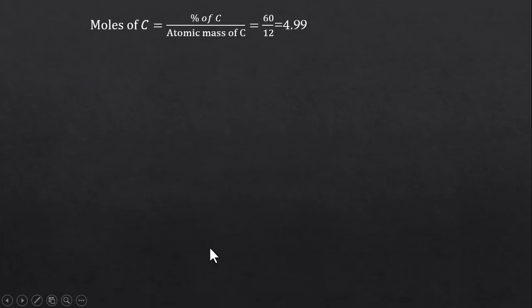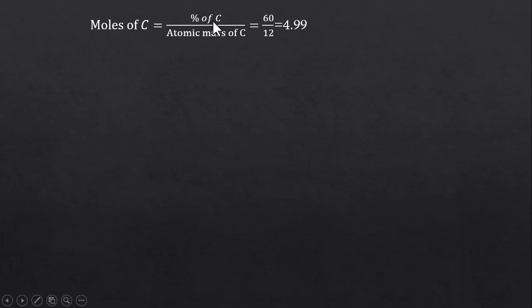Let's convert these percentages into number of moles, which can be done pretty easily. Moles of carbon equals percentage of carbon divided by atomic mass of carbon. The percentage of carbon in the compound was 60%; dividing by 12, we get 4.99 moles of carbon.